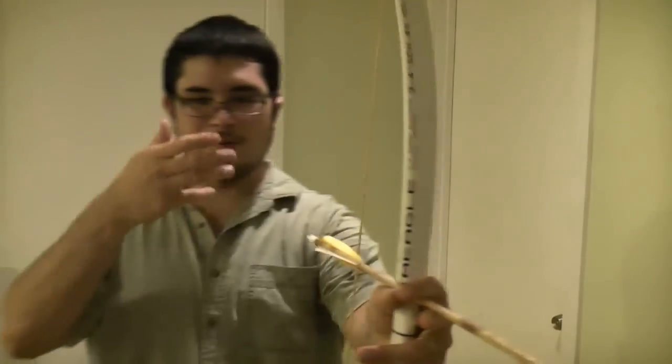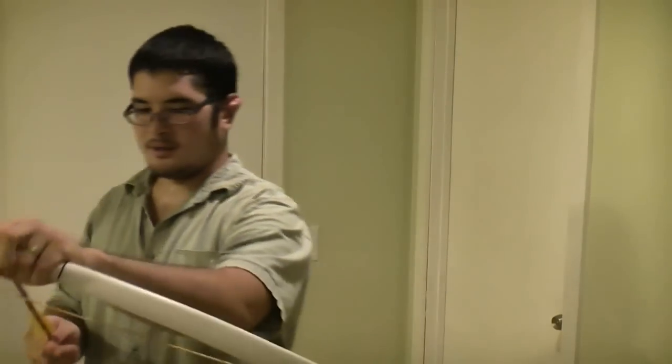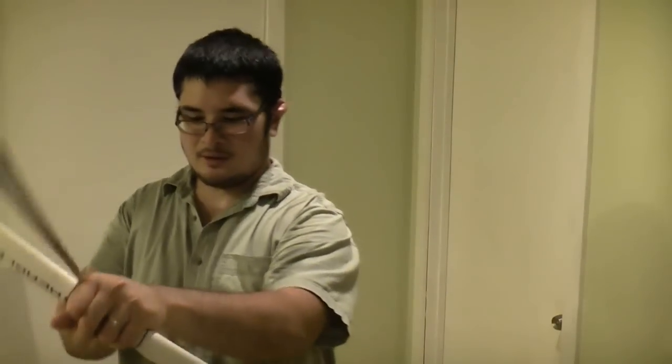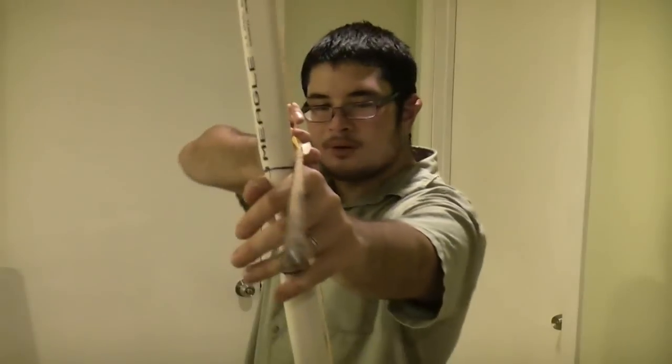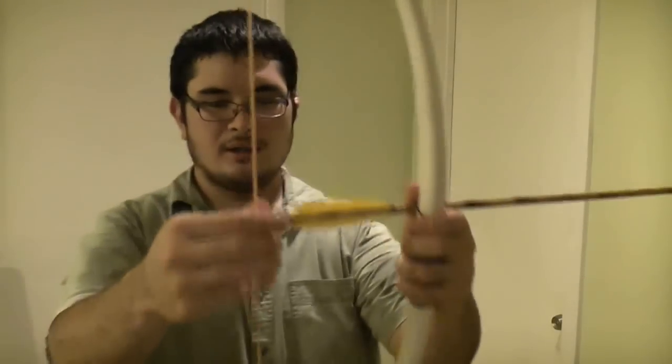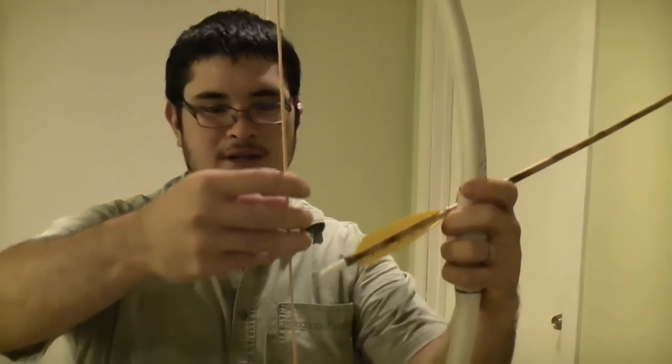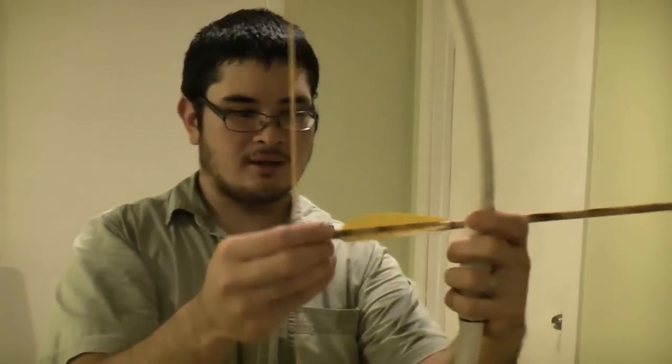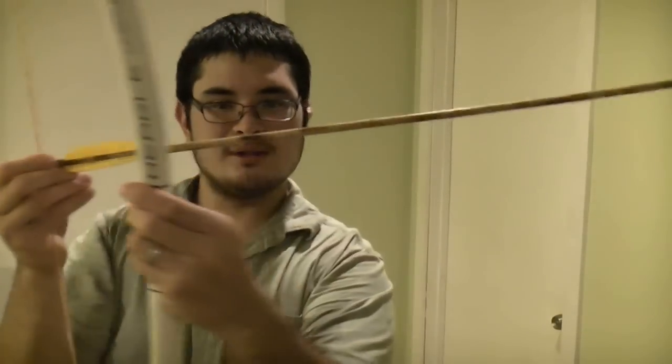because when you're shooting three fingers, if I can demonstrate this. When you pull back, what you're actually doing, and most people do it, you don't even notice it. Your fingers, because of the way you're holding this, are actually twisting the string, and consequently twisting the arrow to stay on the bow.